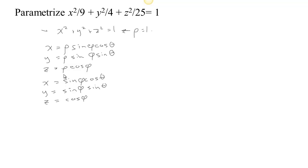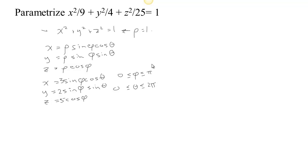So why don't we adapt this slightly? Since there's a 9 under x, I'm going to make x equal to 3 sin φ cos θ; since there's a 4 under y, y equals 2 sin φ sin θ; and since there's a 25 under z, z equals 5 cos φ. That way x squared over 9 equals sin²φ cos²θ, y squared over 4 equals sin²φ sin²θ, and z squared over 25 equals cos²φ — and they add up to give 1 again. So I just scaled the parametrization of a simple sphere to get the parametrization of this ellipsoid. For the bounds: φ goes from 0 to π and θ from 0 to 2π.